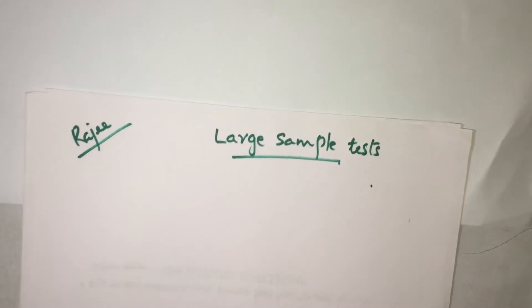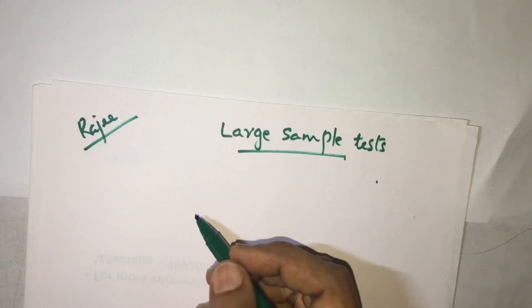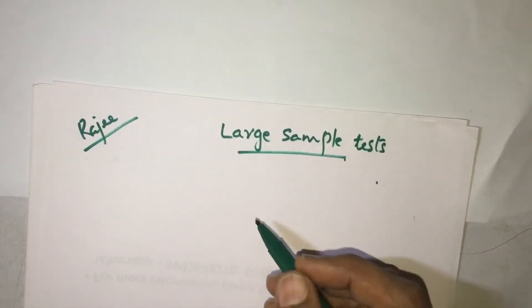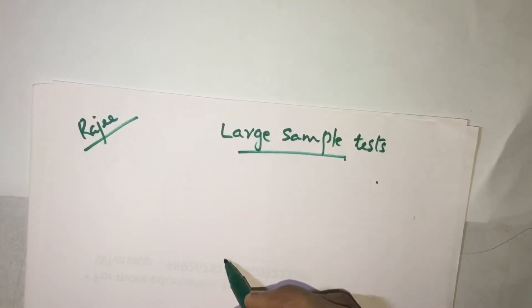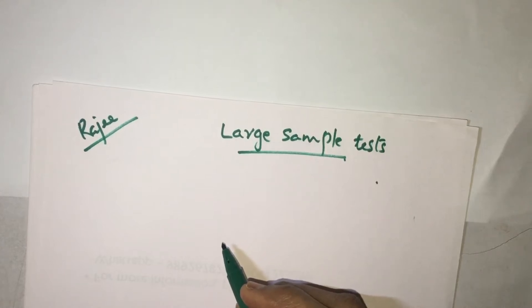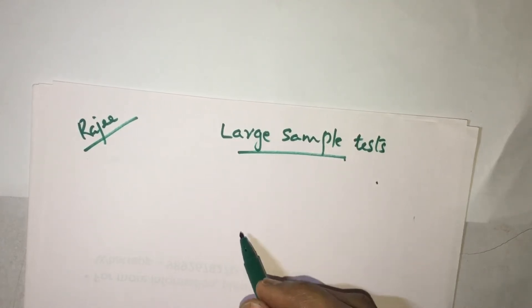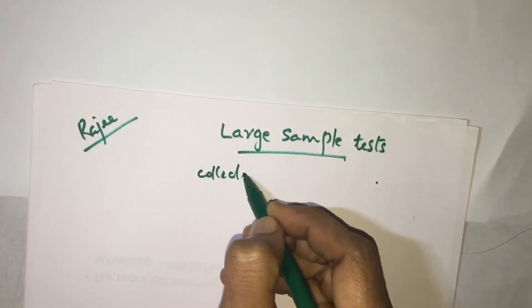To obtain such values, information needs to be collected. To predict or find certain things, we need to collect certain information from whatever the object of study. In statistical language, we call that collection of information for statistical analysis as 'collection of data.'